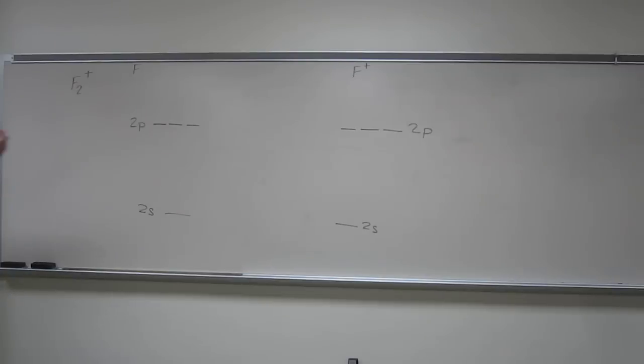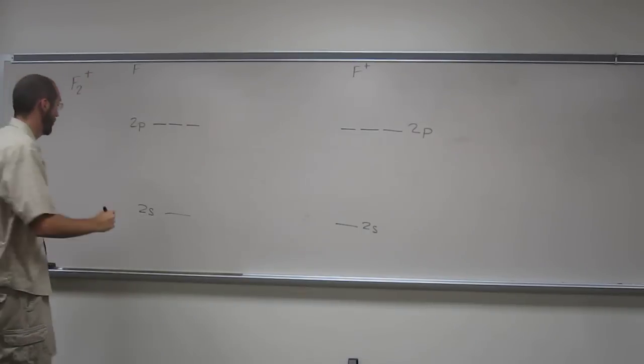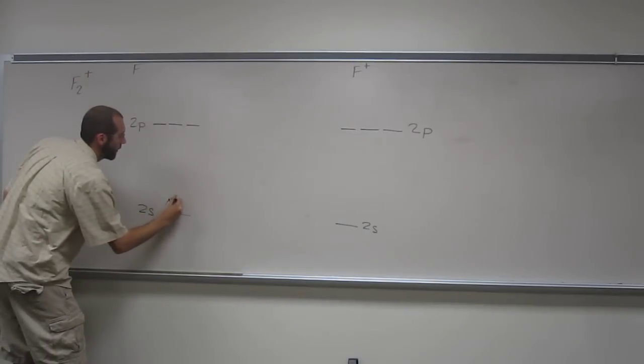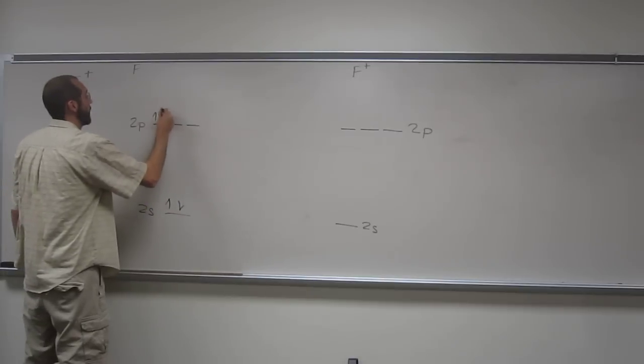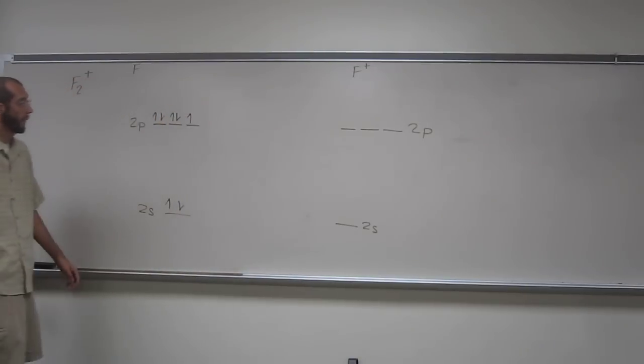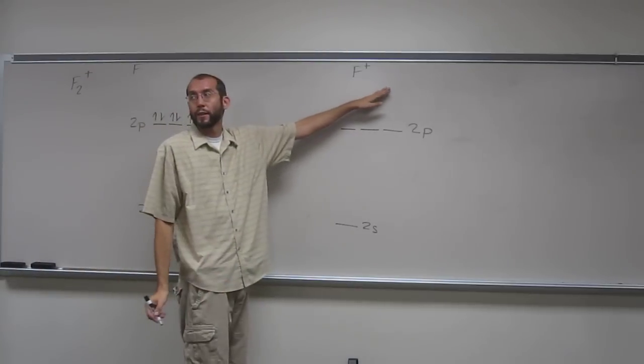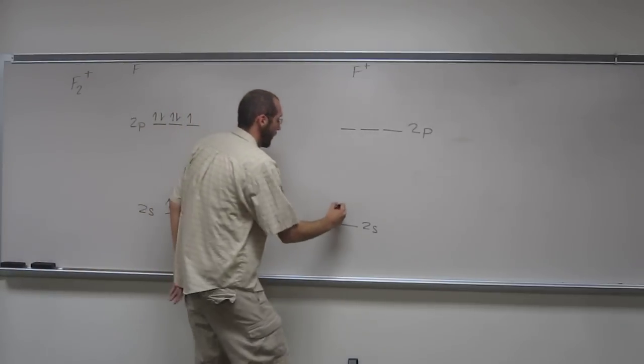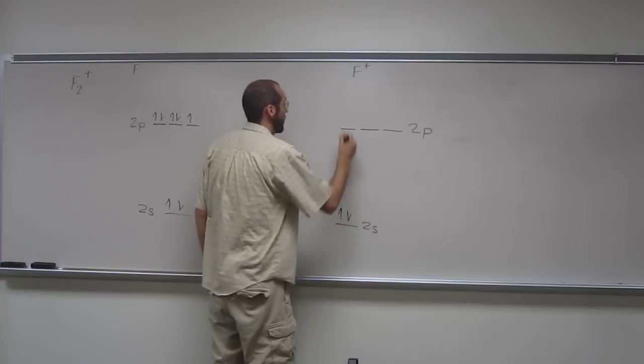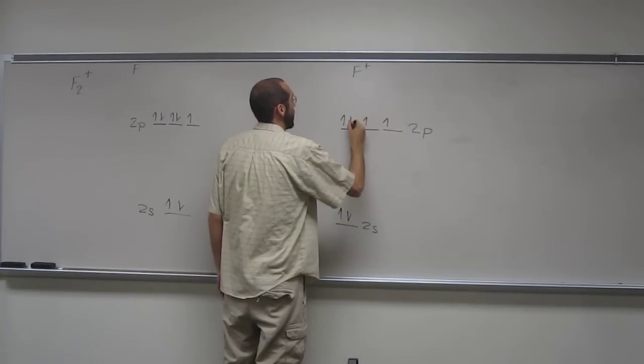So let's go ahead and fill these orbitals before we do anything else. So we just count 1, 2, 3, 4, 5, 6, 7, right? So 1, 2, 3, 4, 5, 6, 7. And then F+ is going to have one less than that. So it must be 6, so 1, 2, 3, 4, 5, 6.